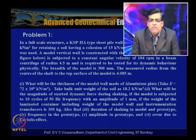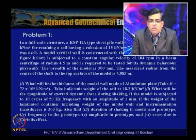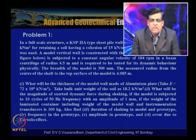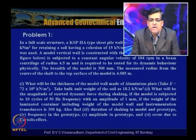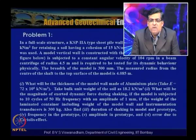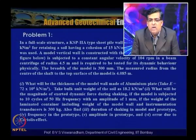The breadth of the model is 300 mm and the measured radius from the centre of the shaft to the top surface of the model is 4.085 m. We are required to find the thickness of the model wall made of aluminium plate (E = 72 × 10⁶ kN/m²), the magnitude of dynamic force during shaking for 10 cycles at 50 Hz with amplitude 1 mm, given that the weight of the laminated container including model wall and instrumentation is 300 kg. Also find the shaking duration in model and prototype, frequency in the prototype, amplitude in prototype, and error due to Coriolis effect.